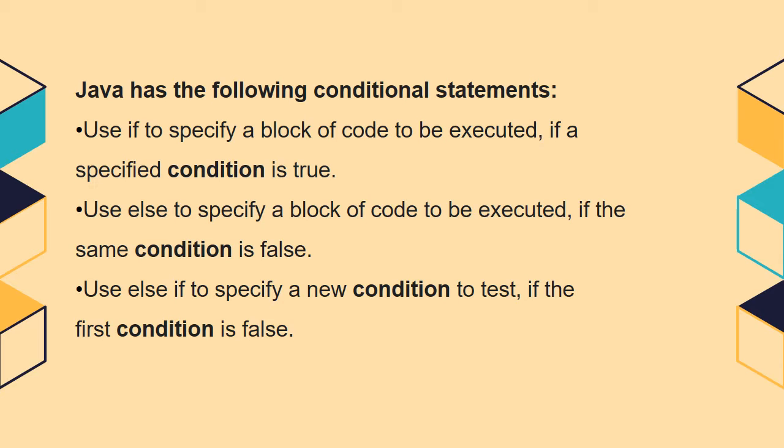Java has the following conditional statements. There are three types of conditional statements. Use if to specify a block of code to be executed if a specified condition is true. Use else to specify a block of code to be executed if the same condition is false. Use else if to specify a new condition to test if the first condition is false.